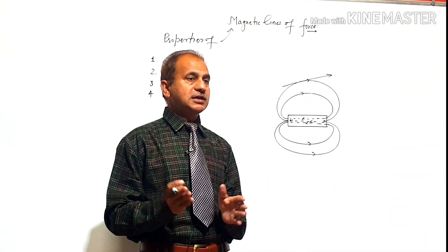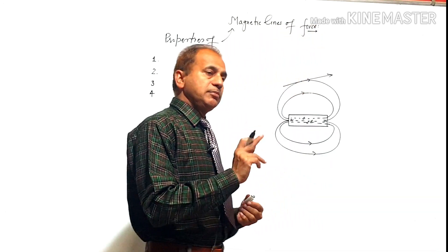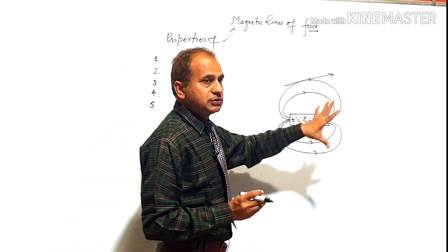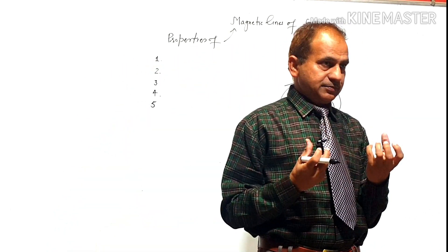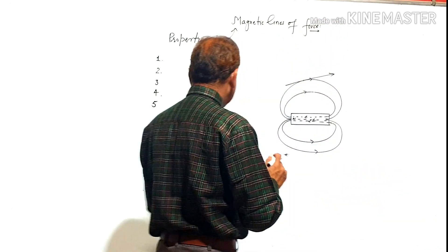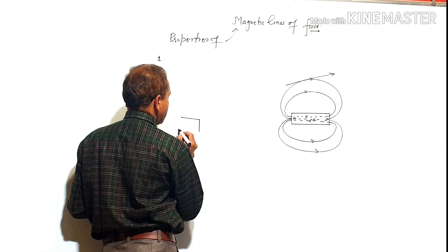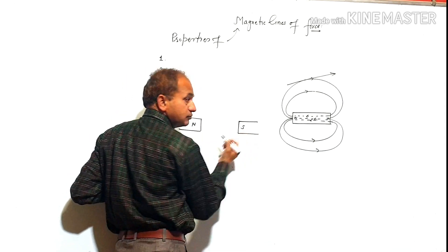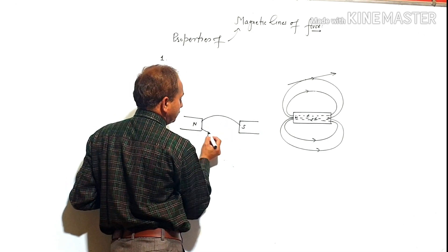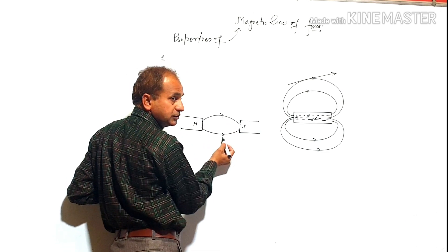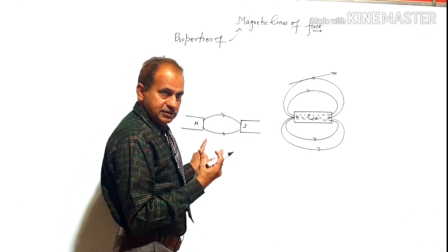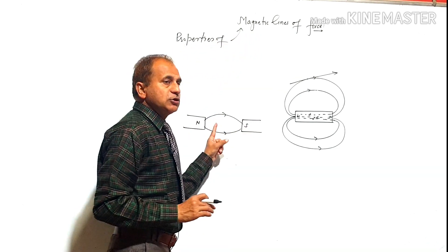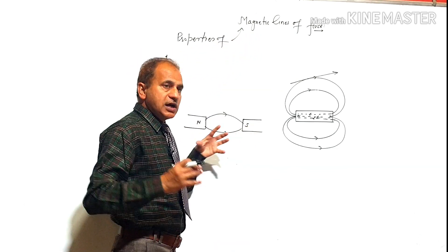Infinite magnetic lines of force can be drawn in a magnetic field. Next property: the magnetic lines of force tend to decrease their length — they contract longitudinally. They tend to decrease their length, or they contract longitudinally. Due to this property of magnetic lines of force, opposite poles attract each other.